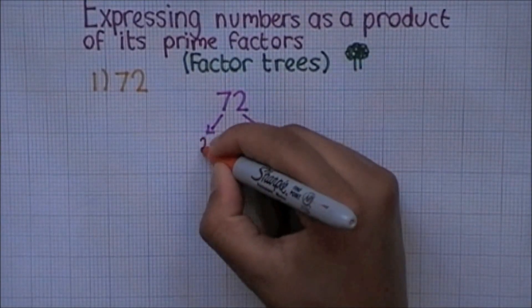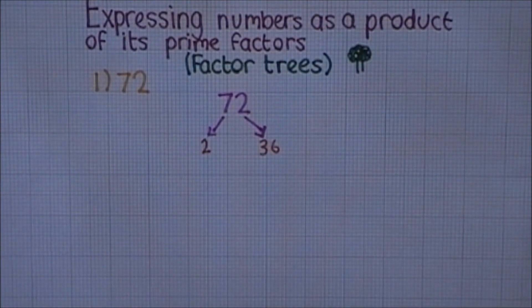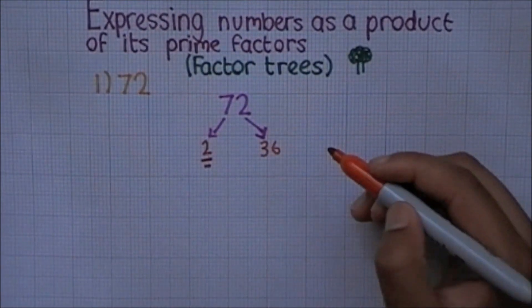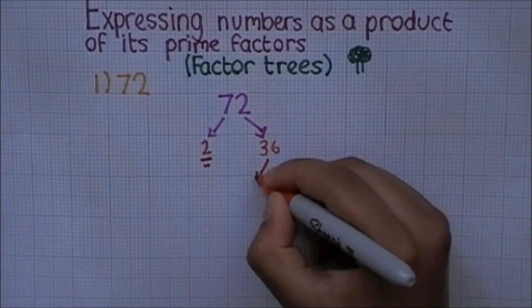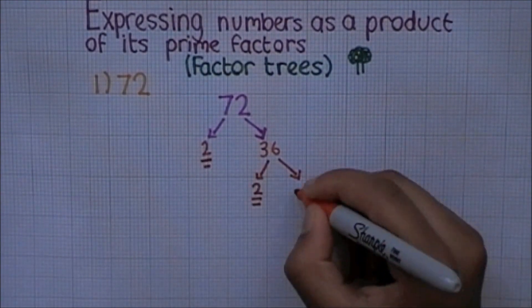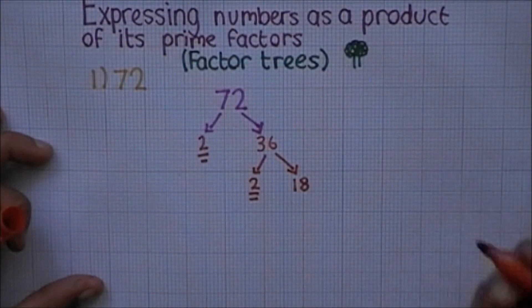We must split up 72 until we're left with a group of prime factors. So we begin by simply dividing by 2 to get the factors 36 and 2, which you write as shown. And we've already found a prime, which we can underline because we'll need it later. Doing the same with 36 now, because that isn't a prime number yet. So we can split that up into 2 and 18. And we've found another prime which we can underline because we'll need it later.